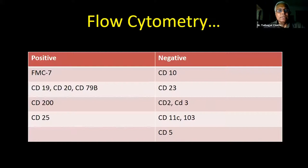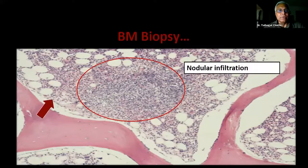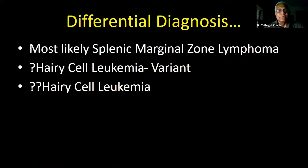So our positives were FMC7, CD19, CD20, CD79B, and CD25. Negatives: CD10, CD23, CD2, CD3, CD11C, CD103. Bone marrow biopsy showed nodular infiltration as well as interstitial infiltration. The differential diagnosis remained SMZL most likely, hairy cell leukemia variant, and hairy cell leukemia. We did a reticulin stain and observed pericellular fibrosis. In SMZL, you will find intrasinusoidal CD20-positive tumor cells — this is generally not seen in hairy cell leukemia. IHC showed CD20 positive and CD3 negative. Annexin A1 was focally immunoreactive, which was unexpected.